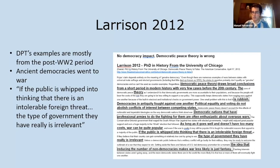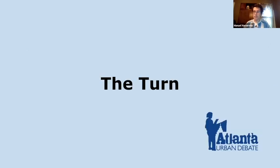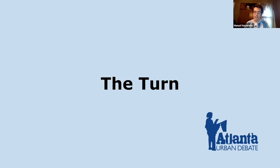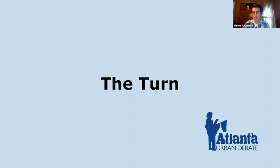Those are the non-turn, defensive arguments. Now I'll talk about the turn. In debate theory, the case turn is a type of argument that tries to turn the affirmative against itself. The affirmative is trying to solve an impact, but the turn argues that the way the affirmative goes about trying to solve its impact actually makes that impact more likely. The general argument behind this turn is that the affirmative actually makes war or conflict between NATO and Russia more likely than it otherwise would be.